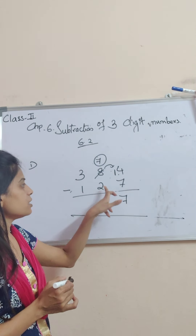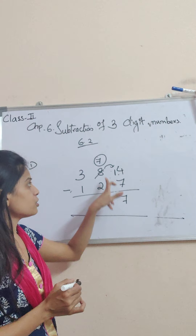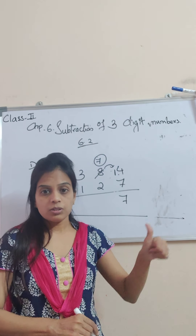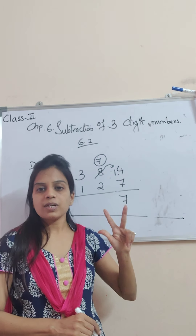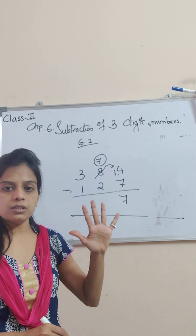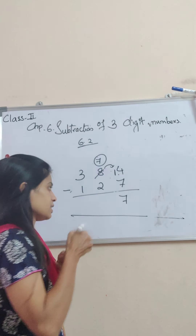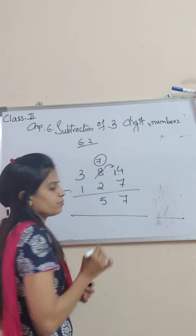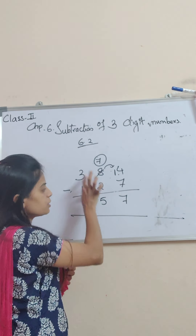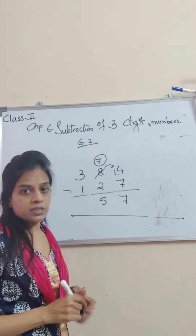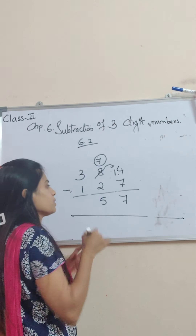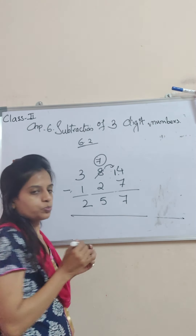Now, 7 minus 2. After 2, count till 7: 3, 4, 5, 6, 7. How many fingers? 5. So we will write hundreds in hundreds place. Hundreds place ko kuch disturb nahi hua. So 3 minus 1 — that is 2.